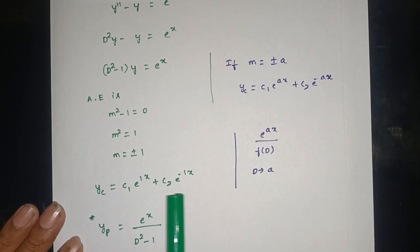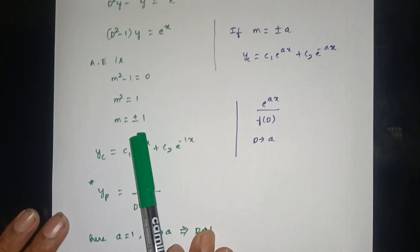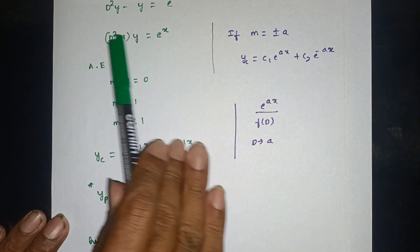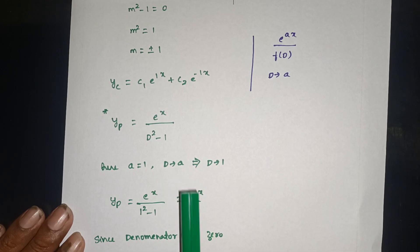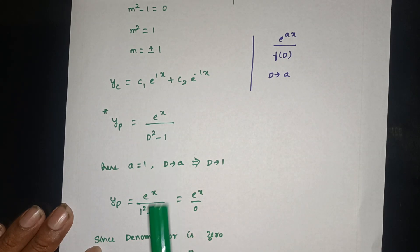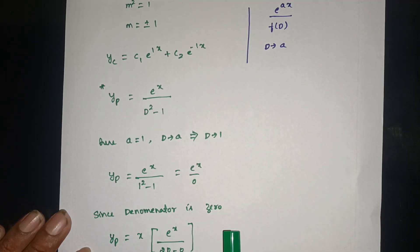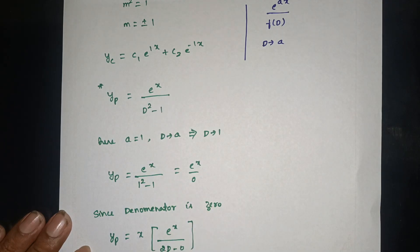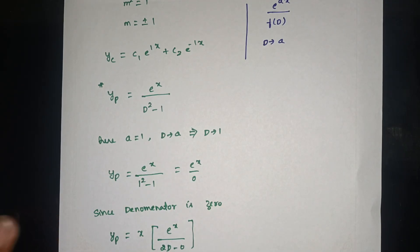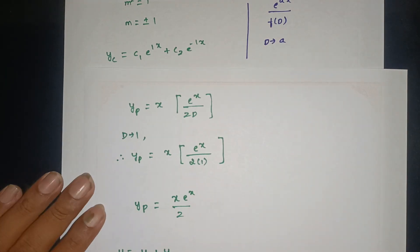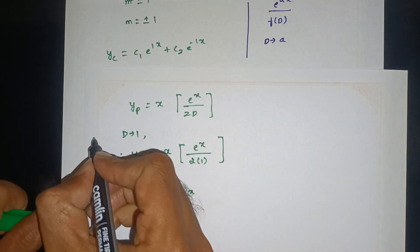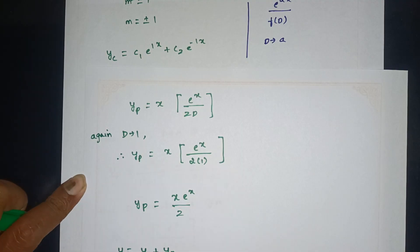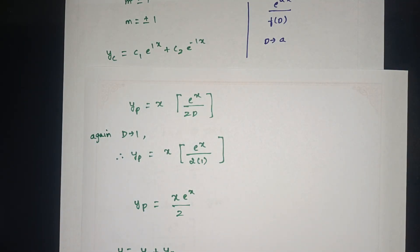For the particular integral: yp equals e to the power x divided by (d squared minus 1). Here a equals 1, so replacing d by 1 gives yp equals e to the power x divided by (1 squared minus 1), which is e to the power x over 0. Since the denominator is zero, multiply by x and differentiate: yp equals x times e to the power x divided by (2d minus 0). Replacing d by 1: yp equals x times e to the power x divided by 2, i.e., yp equals x e to the power x over 2.